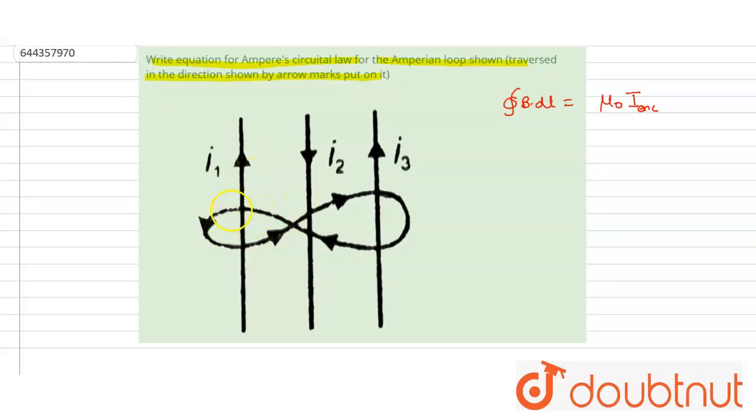For this loop, we will consider only i1, and for this loop, we will consider only i2 and i3. Now, apply the Ampere's circular law.